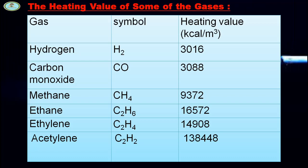The heating values of some gases are as follows: Hydrogen — 3,016 kcal per m³; Carbon monoxide — 3,088 kcal per m³; Methane — 9,372 kcal per m³; Ethane — 16,572 kcal per m³; Ethylene — 14,908 kcal per m³; Acetylene — 13,844 kcal per m³.